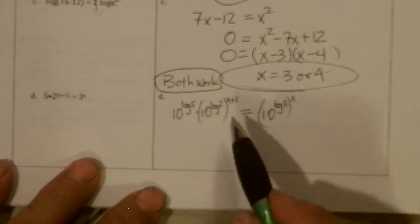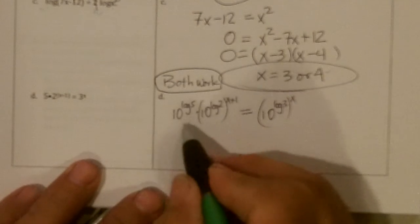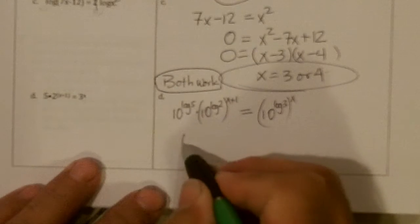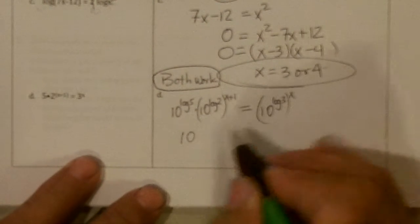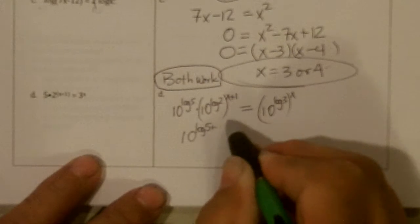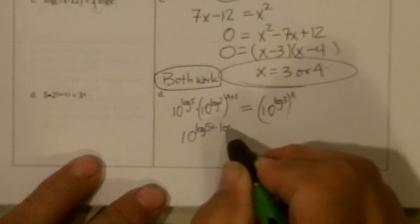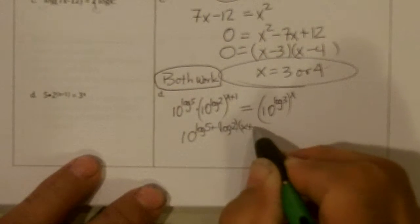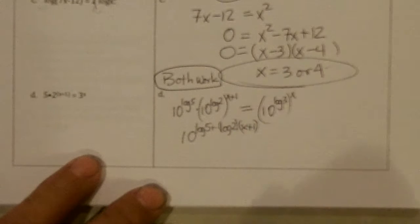Now, if I put these together, I have to add the power, so I get 10 to the log 5 plus log 2 times the quantity x plus 1. Power to power you multiply.